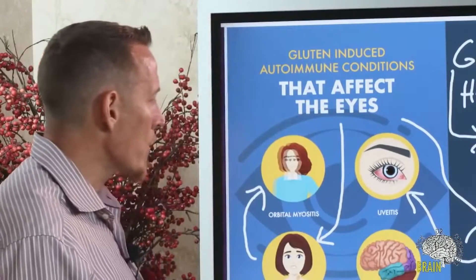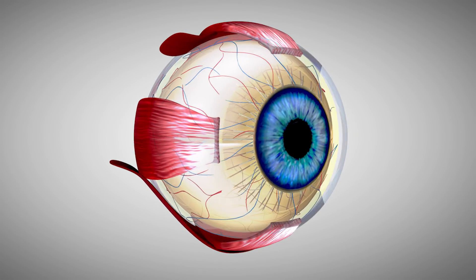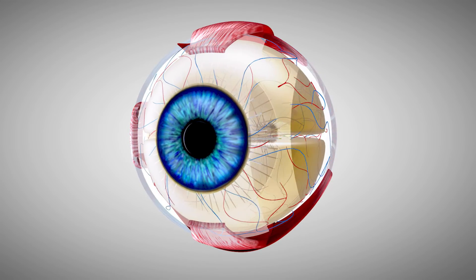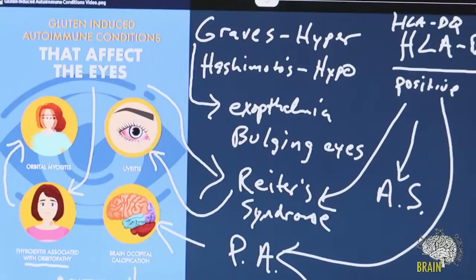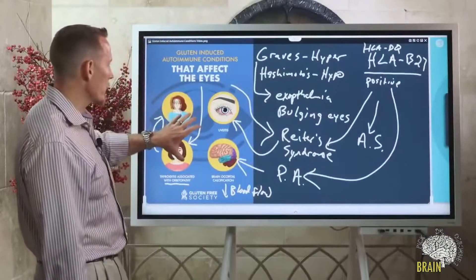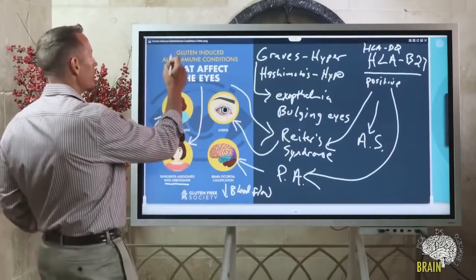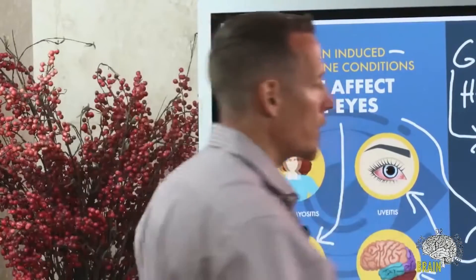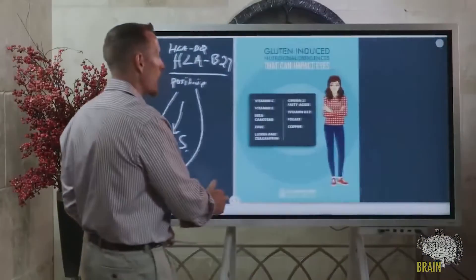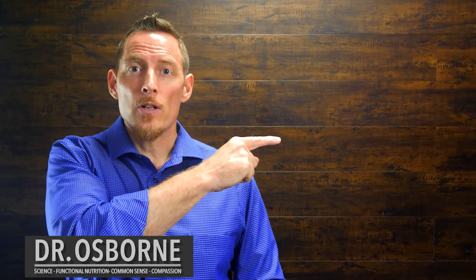Uveitis is a major side effect of certain autoimmune conditions. There are also autoimmune inflammatory diseases that can cause brain and occipital calcification. If that happens around the optic nerve or eye, those blood vessels can develop calcifications, leading to reduced blood flow to the eye, which over time damages vision. These are all potential autoimmune pathways that gluten can contribute to. The key takeaway is: you can avoid gluten. It would be far more painful to lose your ability to see than to change your diet.